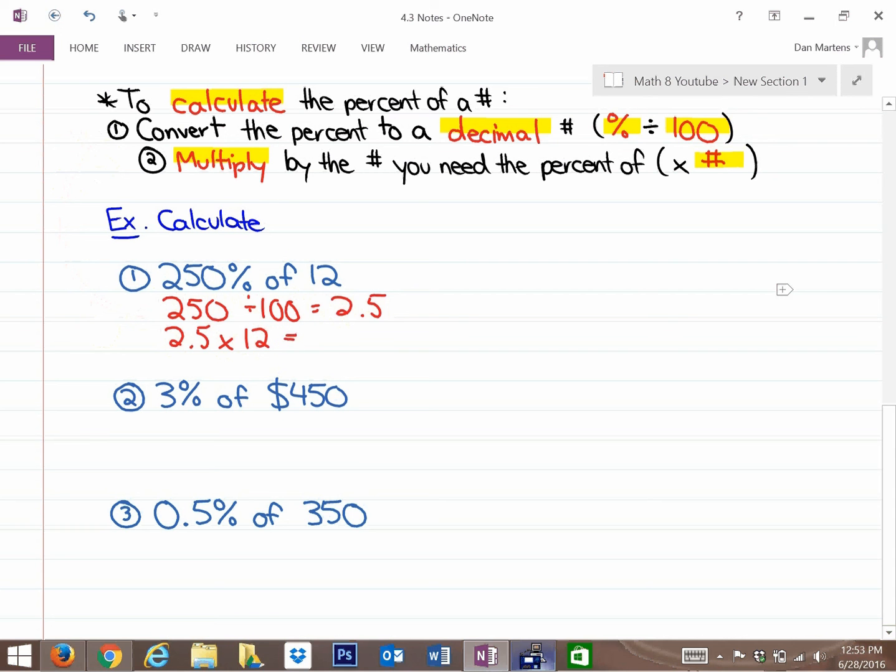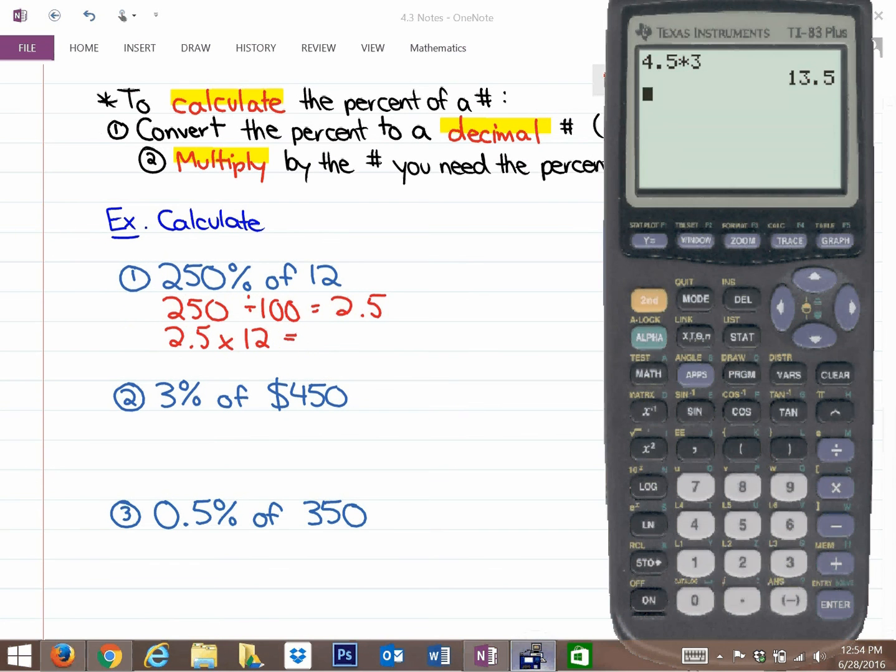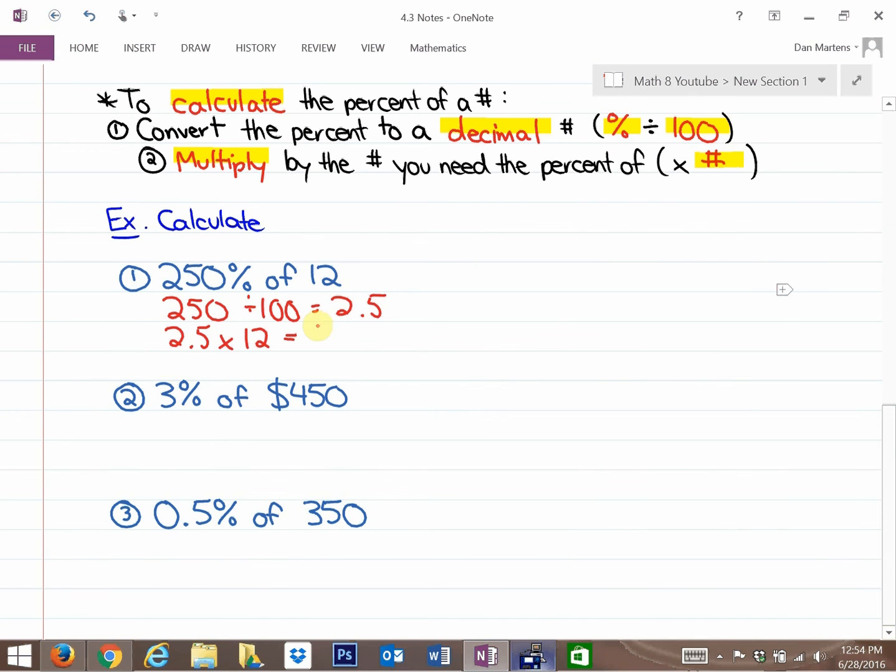The next step is to take that decimal and multiply by what you're getting the percent of, and we're getting the percent of 12. So 2.5 times 12. And again, it does make some sense. 250% of 12 would be 2.5 times 12, right? Because 1 times 12 would be 100%. Make the percent a decimal and multiply by the number you need the percent of. So 2.5 times 12, you could check on your calculator, is 30. Same answer we had previously.